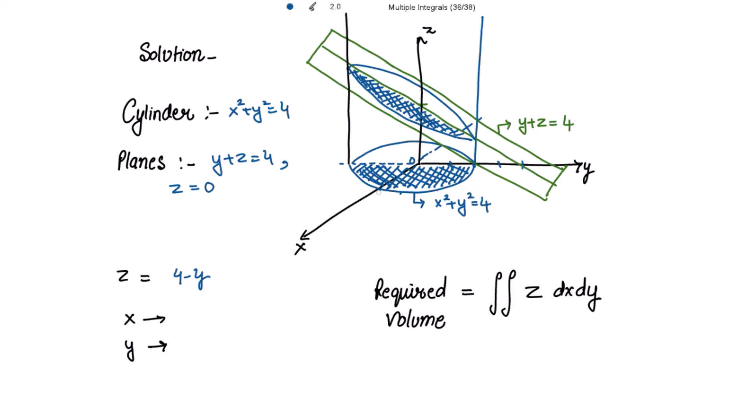It is clear from the figure that z is to be integrated over the circle x² + y² = 4 in the xy-plane. Half of the region is shaded for the circle, so the required volume will be twice the double integral of z dx dy.